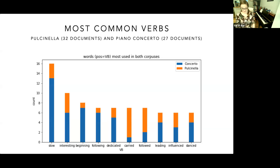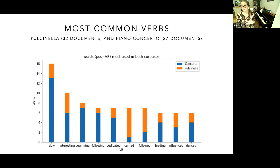Next we have the most common verbs associated with each piece. One term that stands out for me is the word 'danced.' My intuition would be to associate this more with Pulcinella because it is a ballet — and the concerto has never been choreographed — but here we can see that that intuition doesn't play out, at least not in the corpus I've gathered. One thing I can do in my analysis is try to pull out what might have been dance-like about the concerto that brought this to the forefront for people. The analytical process in this way can bring out an experience that is antithetical to mine and hopefully help me hear it better.